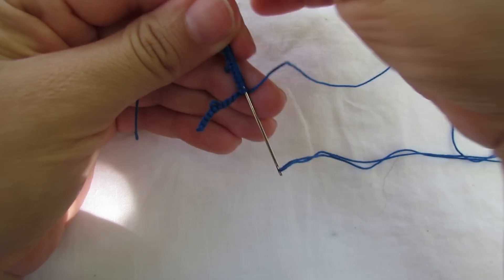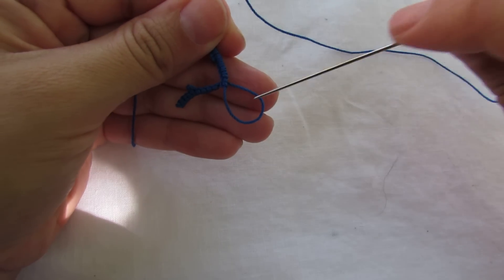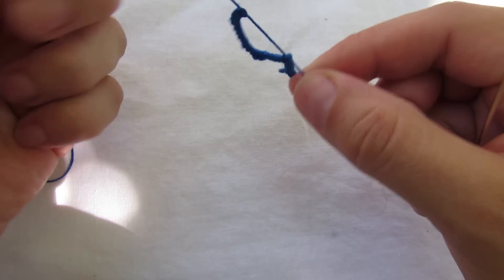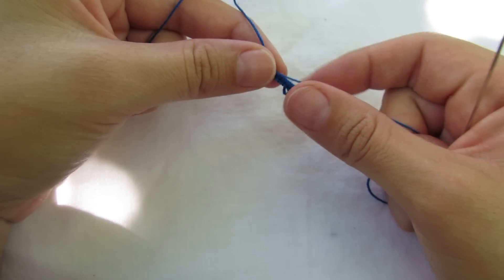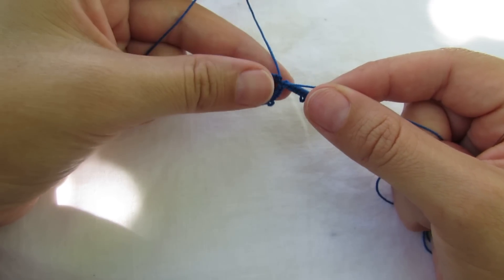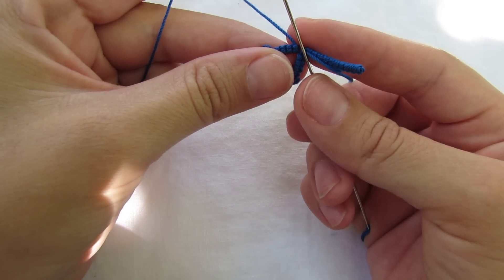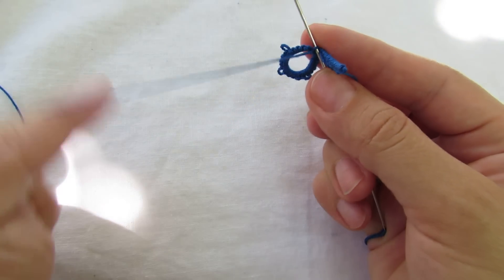Now let's close the ring. We're not going to make a knot; we're just going to go under the ring, flip it over like that, and do five double stitches, picot, five double stitches.